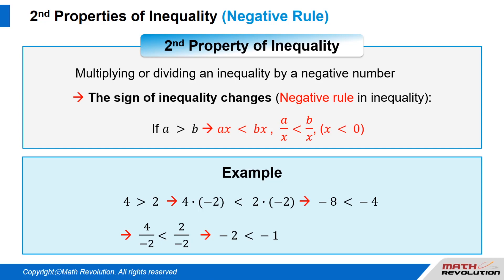For example, 4 is greater than 2. When we multiply both sides by negative 2, we get 4 times negative 2 is less than 2 times negative 2, or negative 8 is less than negative 4. Thus, the inequality sign changes.